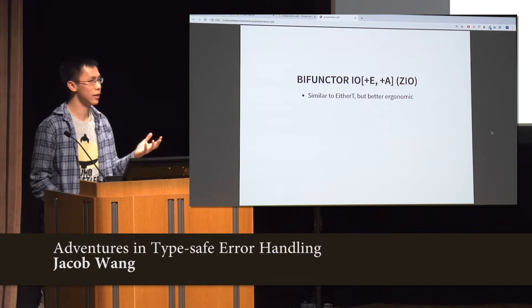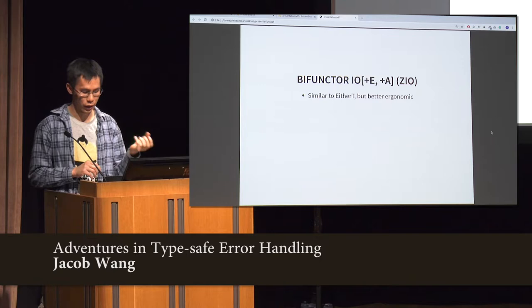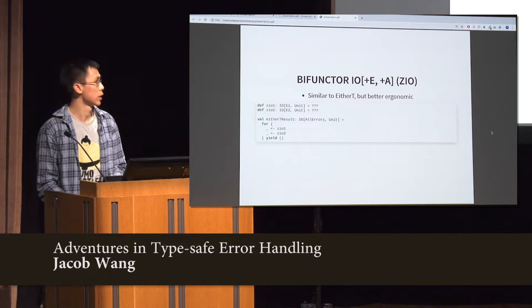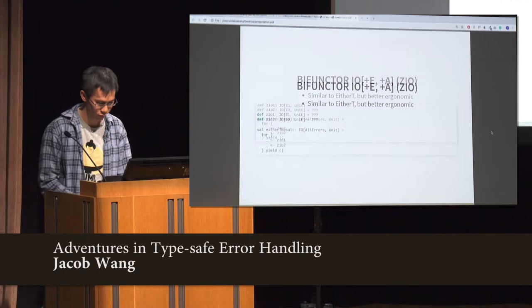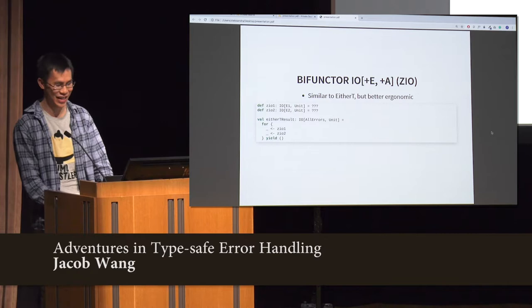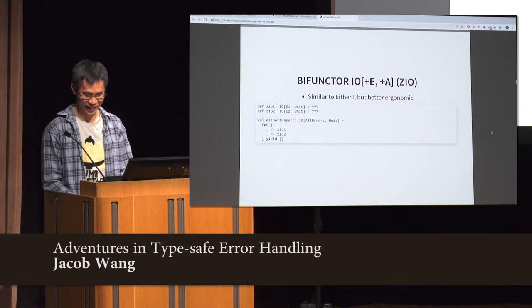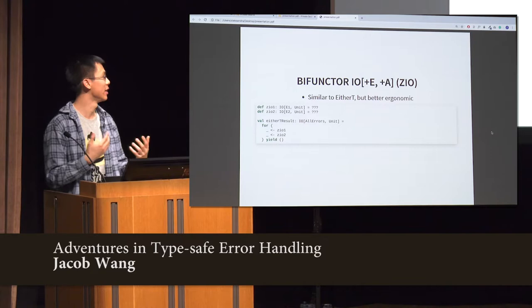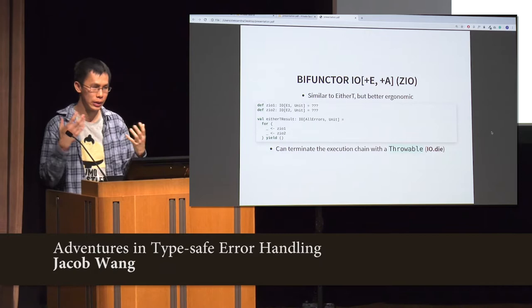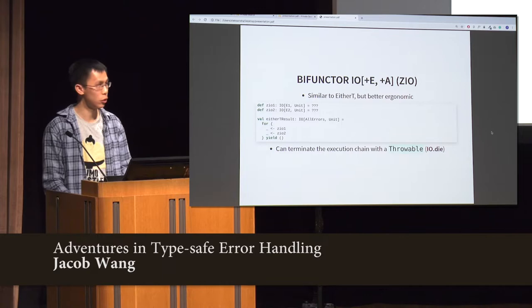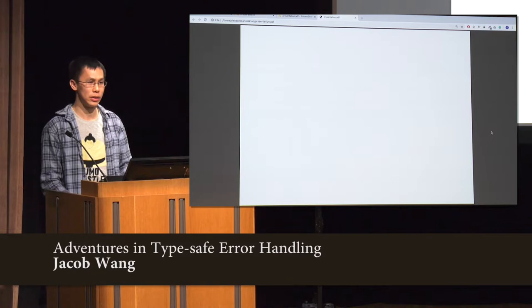Next we have the bifunctor IO — ZIO. It's a bit like EitherT. You can see that the type signature is quite similar: you have an error type and you have a success type. But you have better ergonomics, because now we retain our ergonomics — the Scala compiler can automatically infer the right error type for us, which is pretty awesome. And similar to IO from Cats and Monix, you have a Throwable way to terminate the whole execution chain for critical errors that you don't think your client can reasonably handle.